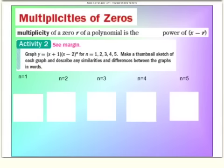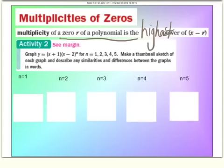This next slide covers Objective 20: find and understand multiplicities of zeros of a polynomial. Multiplicity is when a zero r of a polynomial appears at its highest power. Back on the first slide, when we factored (x minus 3)(x minus 3), we'd combine that as (x minus 3) squared, meaning that factor has a highest power of 2. So we say x minus 3 has a multiplicity of 2.